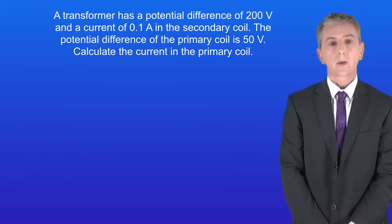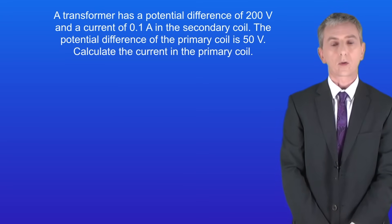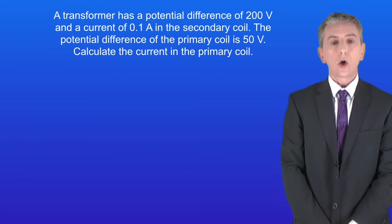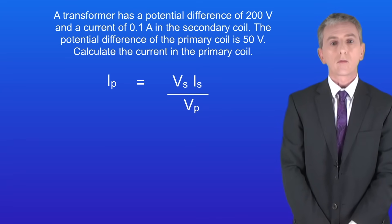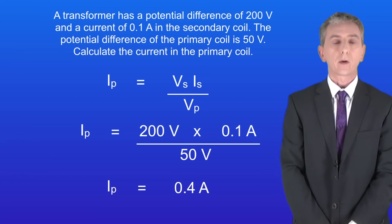Here's a question for you: a transformer has a potential difference of 200 volts and a current of 0.1 amperes in the secondary coil. The potential difference in the primary coil is 50 volts. Calculate the current in the primary coil. We need to rearrange the equation to calculate the current in the primary coil. Putting the numbers in gives us a current in the primary coil of 0.4 amperes.